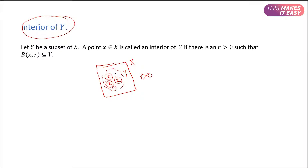All points x and their balls that are inside Y are interior points. If we take a point on the boundary and draw a ball around it, that ball will not be entirely inside Y, so that point is not an interior point of Y.